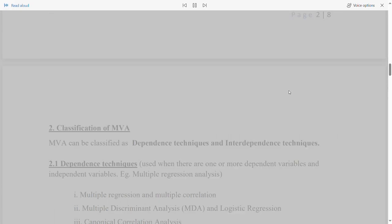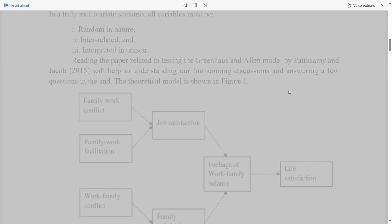Statistical techniques that simultaneously analyze multiple measurements of the observed variables are known as multivariate analysis, MVA. We may perform MVA by using multiple variables in a single relationship or in multiple relationships. In a truly multivariate scenario, all variables must be: 1. random in nature, 2. Interrelated and 3. Interpreted in unison.